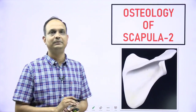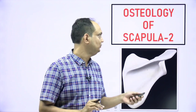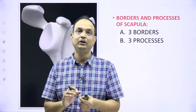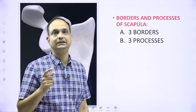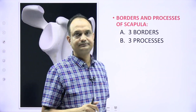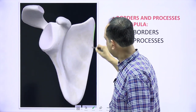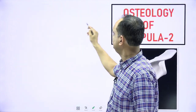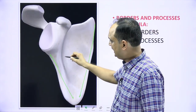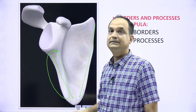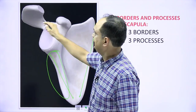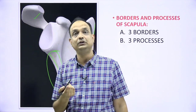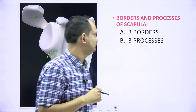Hello friends. In continuation of my first part of the scapula, today we are going to see the remaining part of this bone. In today's lecture, we basically talk about the borders and the processes of the scapula. There are 3 borders and 3 processes. The 3 borders are the medial border, lateral border, and superior border. The lateral border is the thickest border. The 3 processes are the coracoid process, acromion process, and the spinous process on the dorsal surface. Let's see them one by one.